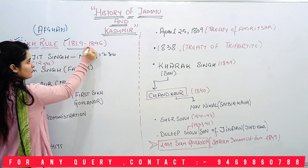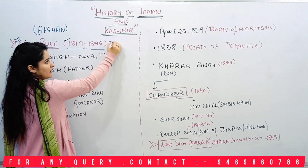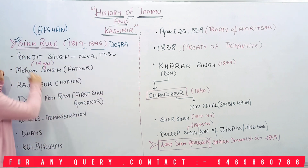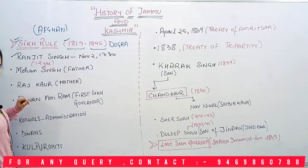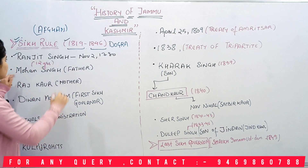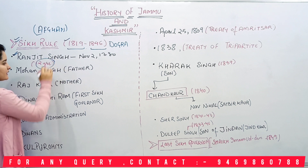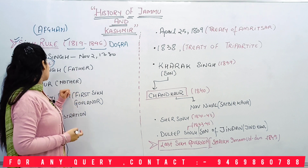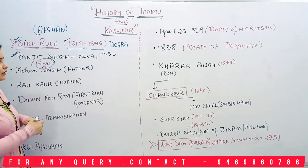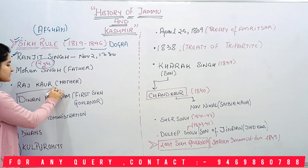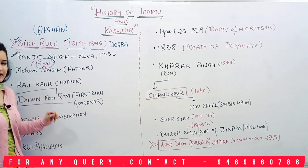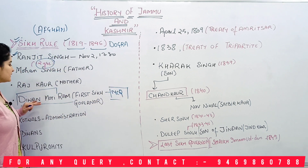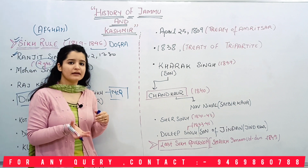The Sikh rule started in 1819 and ended in 1846, after which the Dogra rule came. In this Sikh period, Maharaja Ranjit Singh — son of Mohan Singh, with his mother being Raj Kaur — became ruler at age 12 after his father's death. Ranjit Singh came to Jammu and Kashmir and appointed the first governor. This is a very important MCQ.